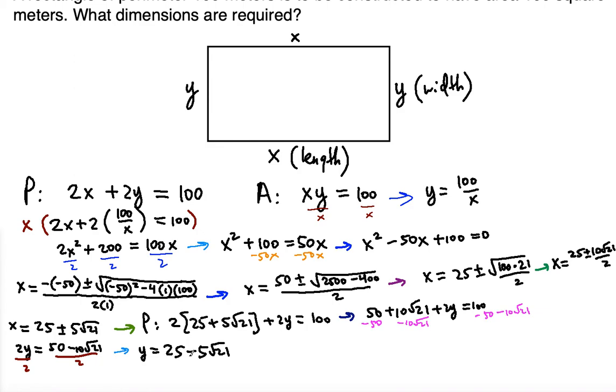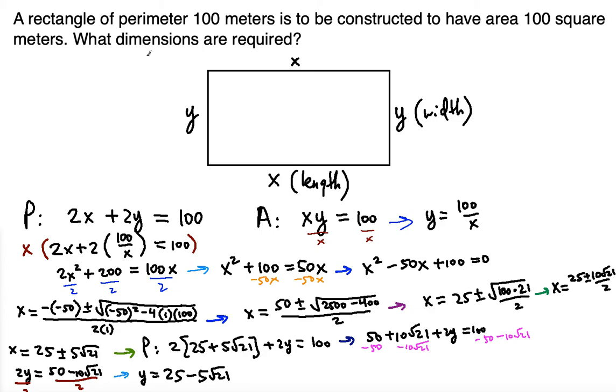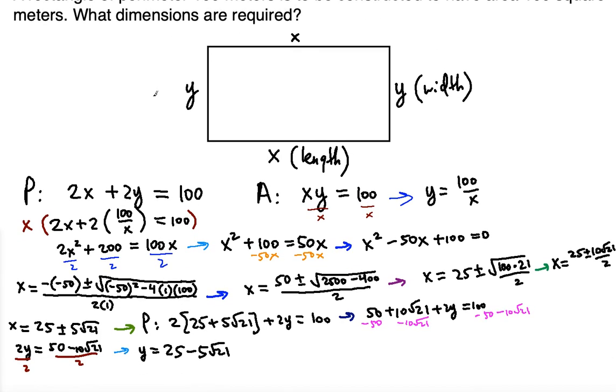And it doesn't matter which dimension you set equal to what. I know you might say, but the y can be, y is a different value when there's a plus. But the question is asking you what dimensions are required. They're not asking you what is precisely the length and what is precisely the width. They're just telling you find the dimensions.